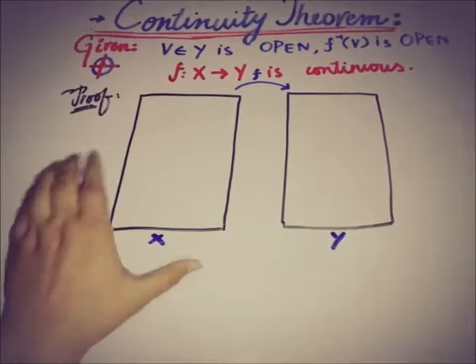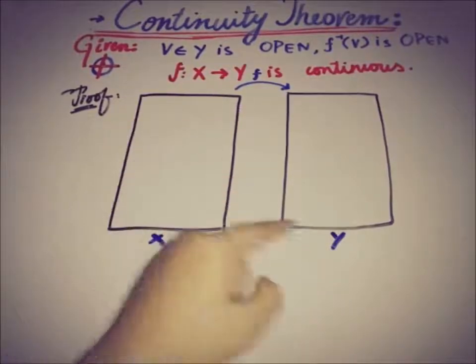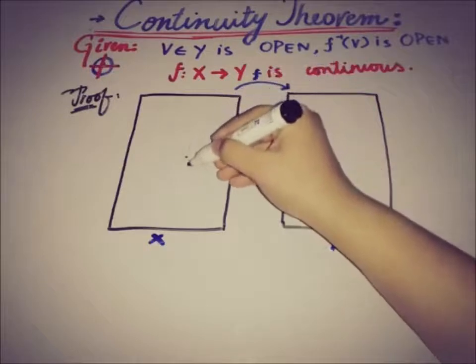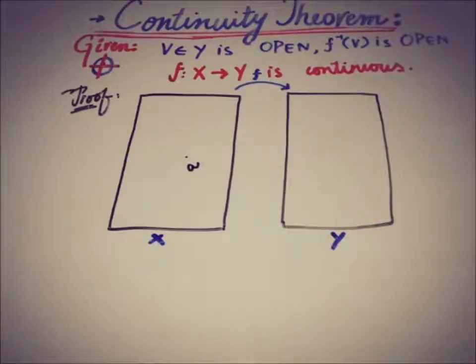We have two spaces X and Y and there is a function from X to Y. The target of the theorem is that f is continuous. Let's take a random point a from space X and also take a neighborhood of that point a.